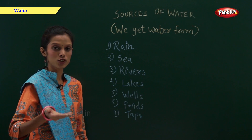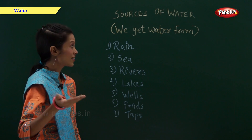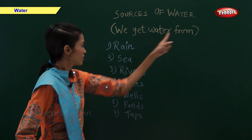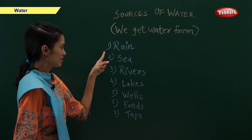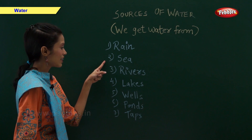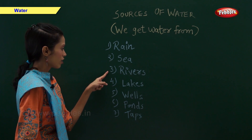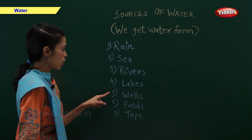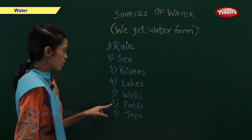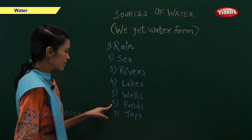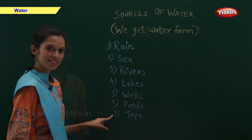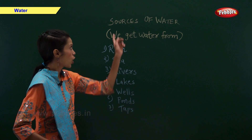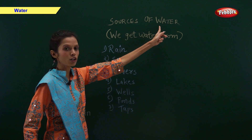Sources of water: We get water from rain, sea, rivers, lakes, wells, ponds and taps. Now I will show you pictures of various sources of water.